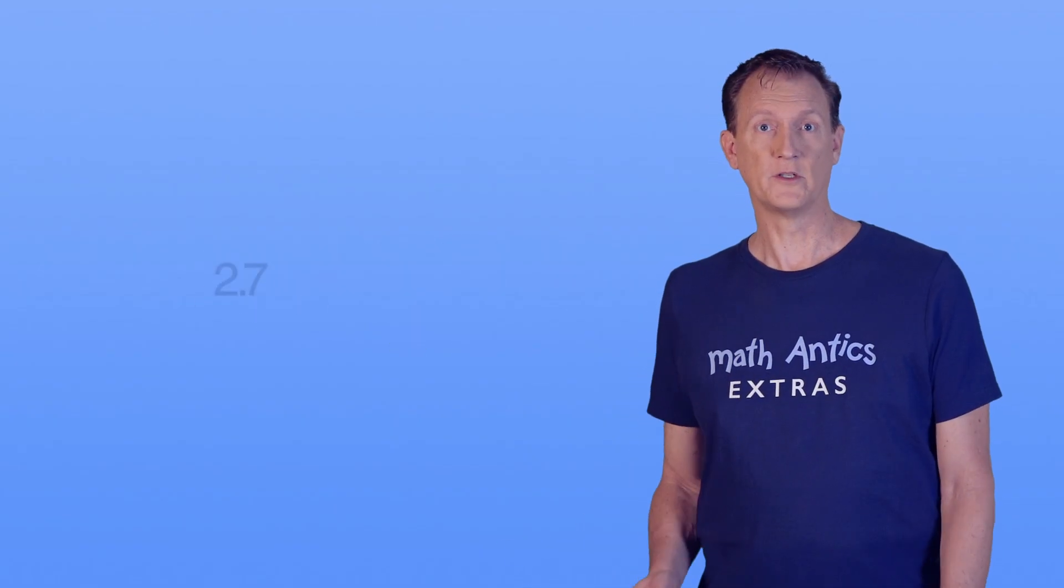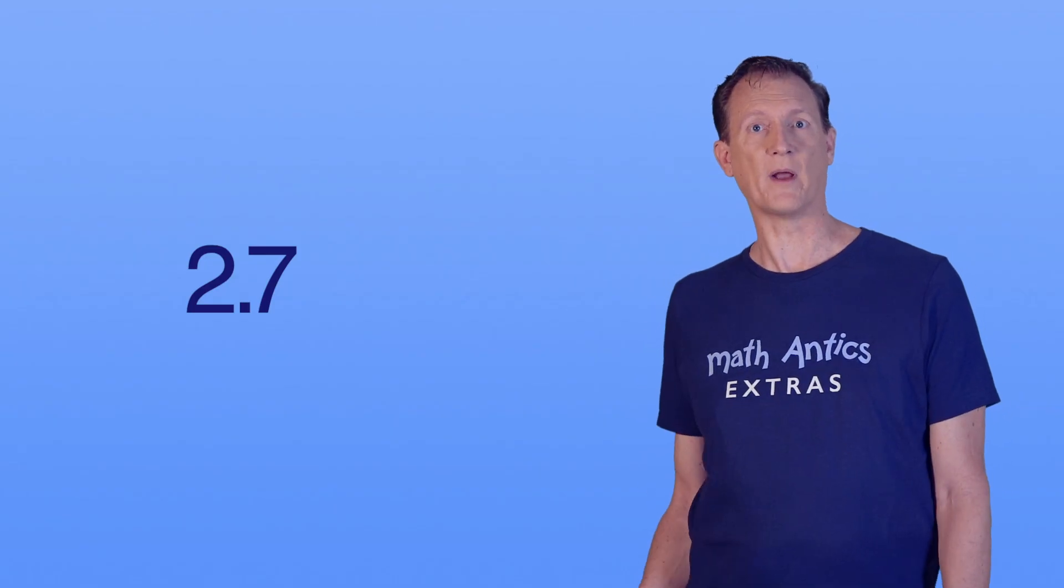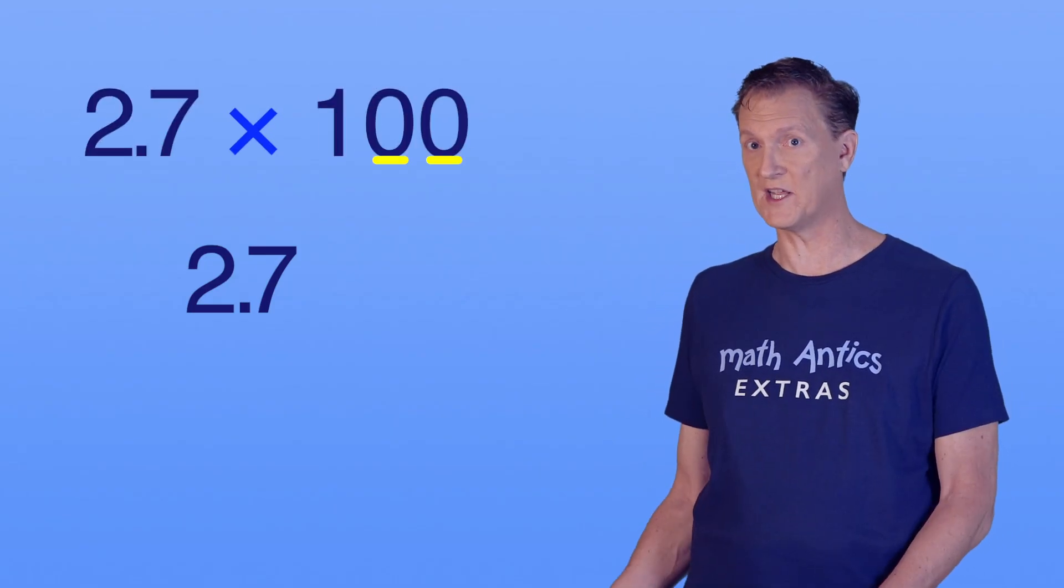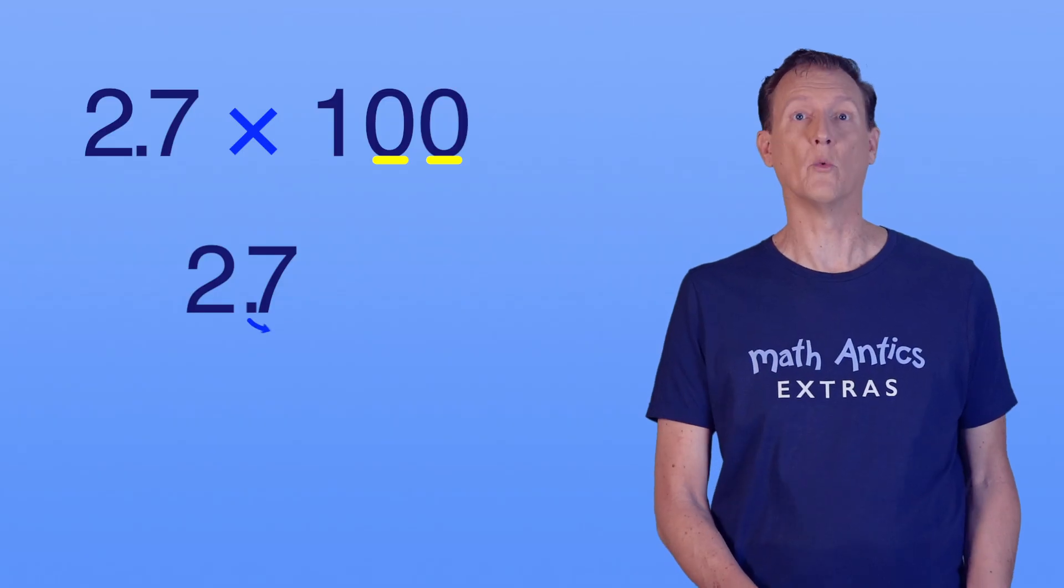Let's try it with this number, 2.7. We'll multiply it by 100. 100 has two zeros, so we shift the decimal point two places to the right. 1, 2.